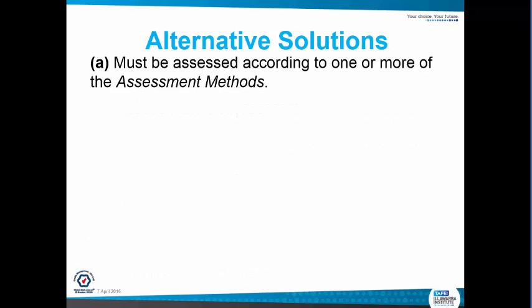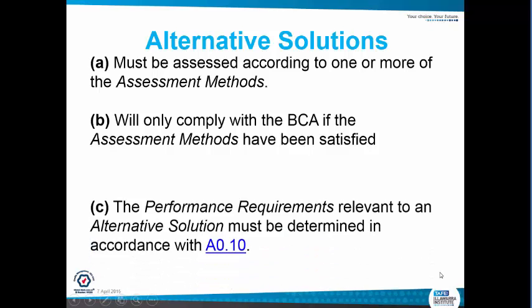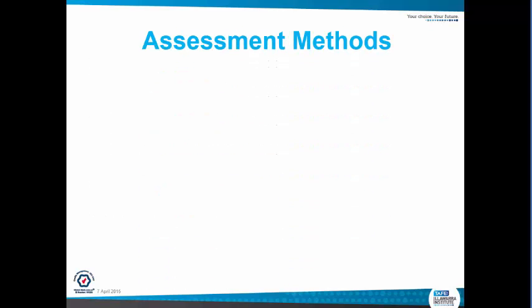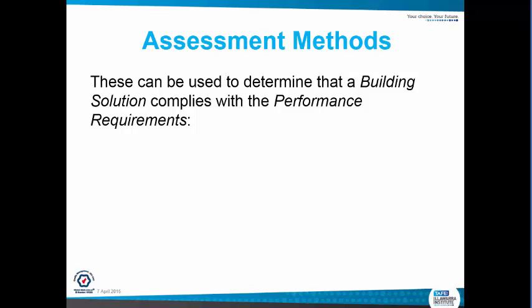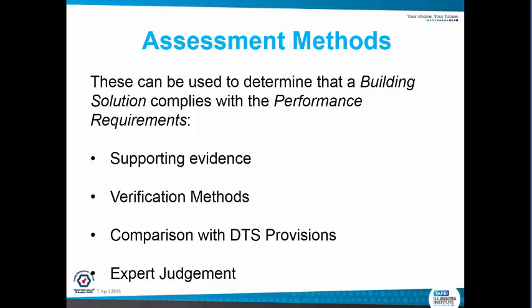Alternative solutions must be assessed according to one or more of the assessment methods. They will only comply with the BCA if the assessment methods have been satisfied, and the performance requirements relevant to an alternative solution must be determined in accordance with AO10. Assessment methods can be used to determine that a building solution complies with the performance requirements with supporting evidence, verification methods, comparison with DTS provisions, and expert judgment. Whether it could be a structural engineer or a supplier manufacturer, they could give you supporting evidence or expert judgment — for example, with regards to a new type of slab. Then you meet the performance requirements for the alternative solution, but you need that documentation given to your building consultant.